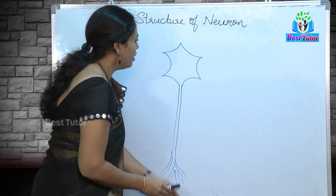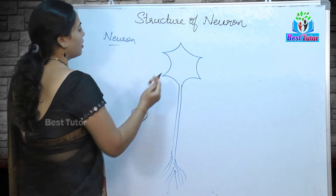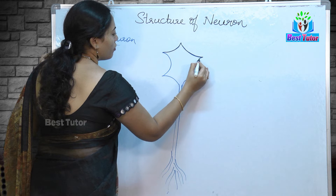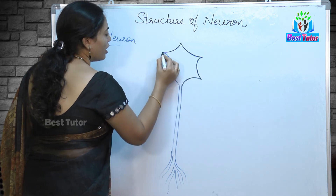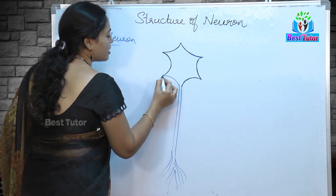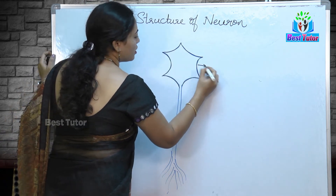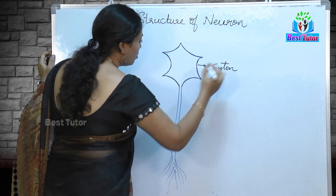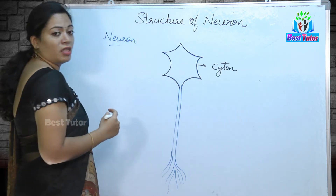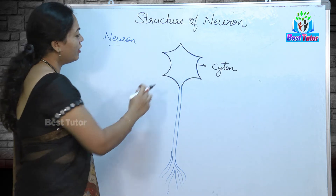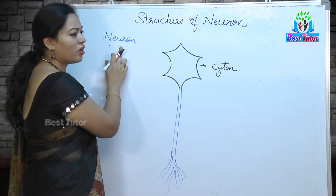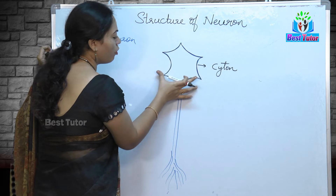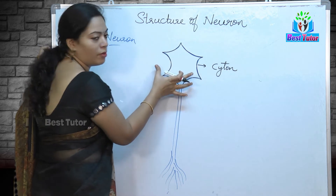If you see, this part of the neuron is known as the cell body or cytone. We all know the cell is the basic unit of life. Even a neuron is nothing but a nerve cell. Here the nerve cell has an actual body known as the cell body.